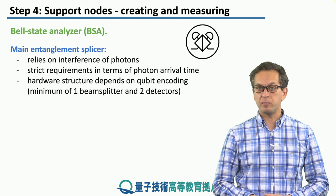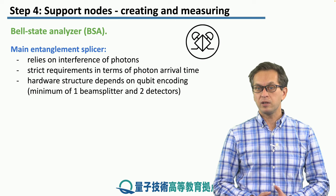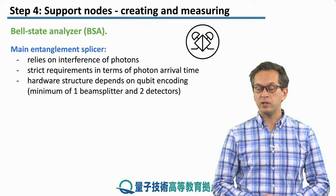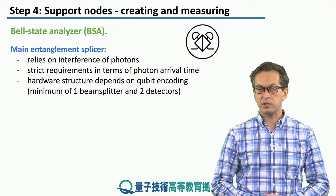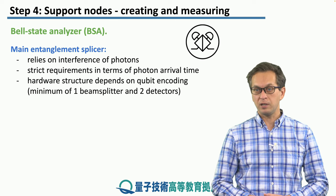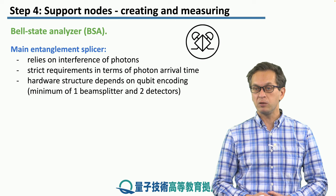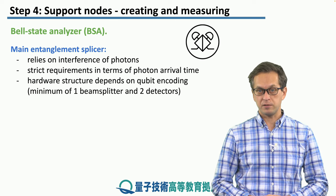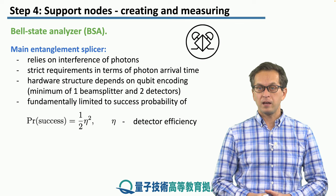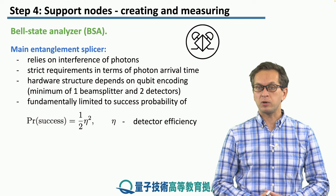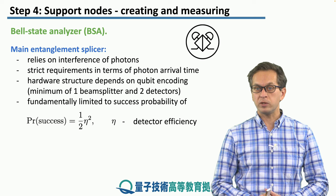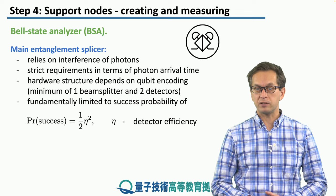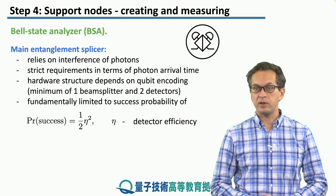The photons must arrive such that there is significant overlap between their wave functions. The hardware structure depends on the qubit encoding. For time-bin encoding, we need a minimum of one beam splitter and two detectors. For polarization encoding, we need one beam splitter, two polarization beam splitters, and four detectors. The BSA is fundamentally limited to a success probability of one-half times eta squared, where eta is the detector efficiency. So even with perfect detectors, we can only succeed 50% of the time.